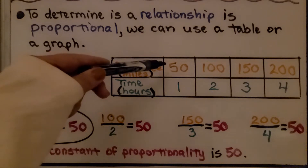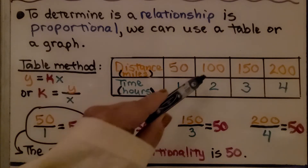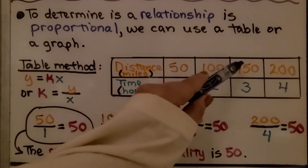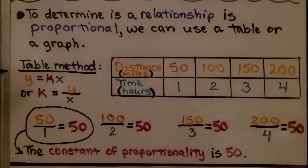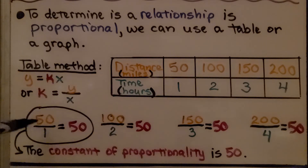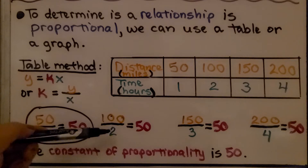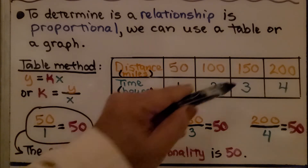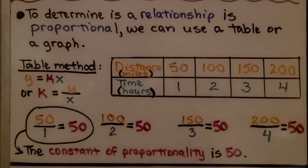We have a distance of 50 miles in one hour, 100 miles in two hours, 150 miles in three, and 200 miles in four. Using the expression y = kx, or k = y/x, we have 50 over 1 equals 50. When we do 100 divided by 2, we get 50. When we do 150 divided by 3, we get 50. And 200 divided by 4 is equal to 50.